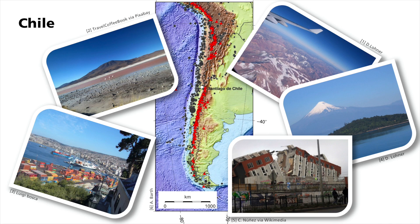On the map, you see active volcanoes shown with the corresponding symbols and earthquakes are indicated by circles – the bigger, the greater the magnitude. The strongest earthquake worldwide ever recorded by seismometers also occurred here in Chile. It took place on May 22, 1960, and had a magnitude of 9.5. Chile is a country that is highly vulnerable to earthquakes.